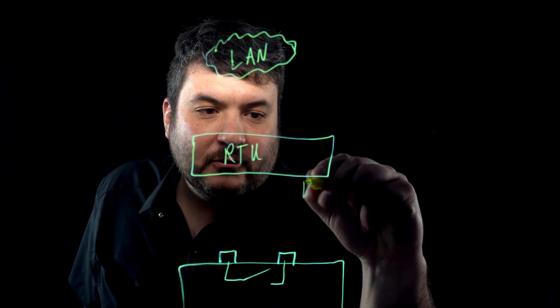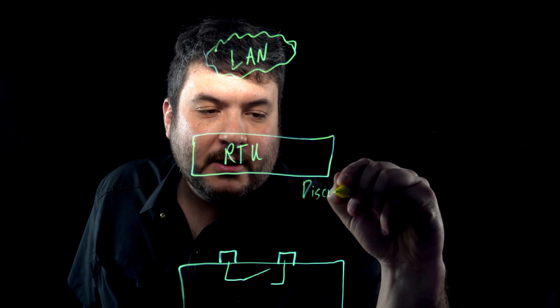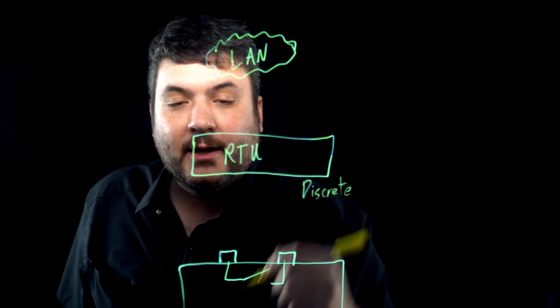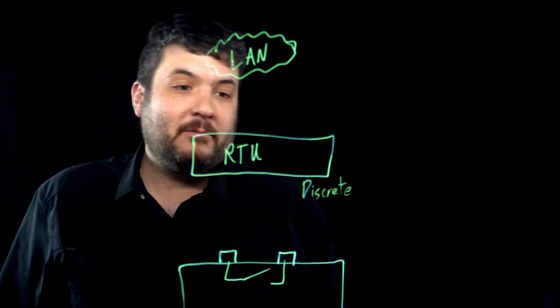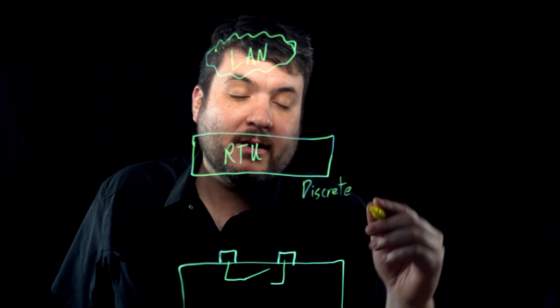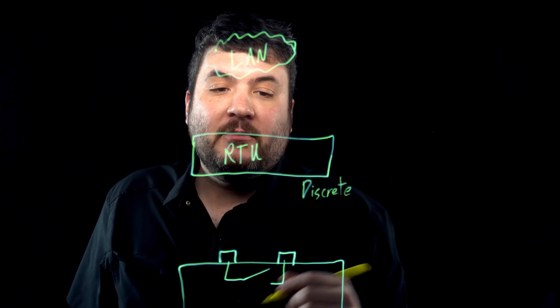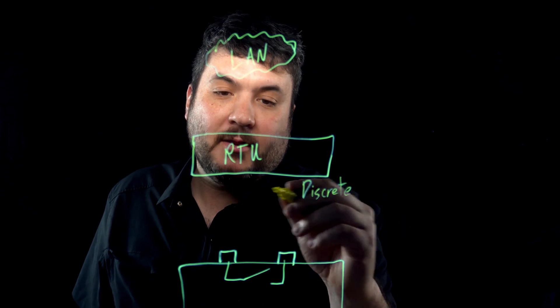You have something called a discrete input. Commonly, RTUs might have 2, 4, 8, 32, 64, 80, or even more than 100. You can have a lot of different counts of these. But you just have an equal number of electrical pairs.